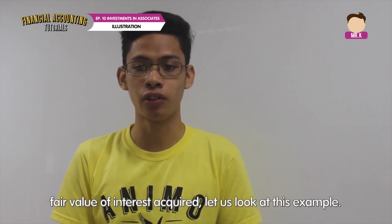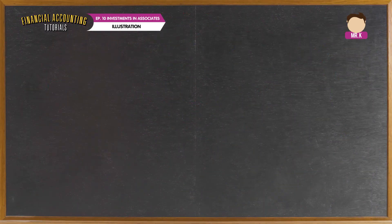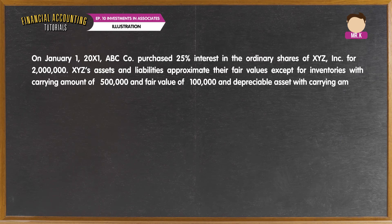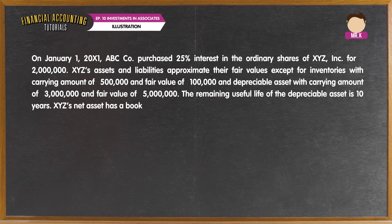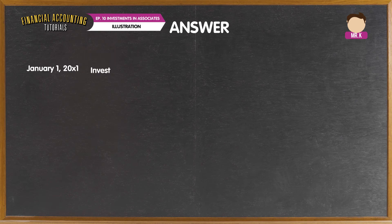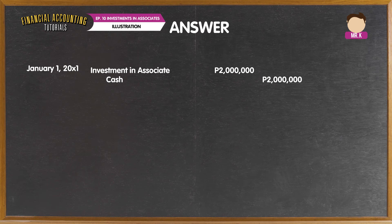To illustrate a situation where the purchase cost exceeds the fair value of the interest acquired, consider this example. On January 1, 20X1, ABC Corporation purchased a 25% interest in the ordinary shares of XYZ Incorporation for P2 million pesos. XYZ's assets and liabilities approximate their fair value except for inventories with a carrying amount of P500,000 and a fair value of P100,000, and depreciable assets with a carrying amount of P3 million and a fair value of P5 million pesos. The remaining useful life of the depreciable assets is 10 years. XYZ's net assets have a book value of P5 million pesos. The entry on January 1 to record the purchase is a debit to the investment in associate account for P2 million and a credit to cash for the same amount. The excess of purchase cost over the book value of the interest is computed by taking the difference of the purchase cost and the book value of the interest acquired, then adding the share in overvaluation of inventory and deducting the share in undervaluation of depreciable assets to get the goodwill.